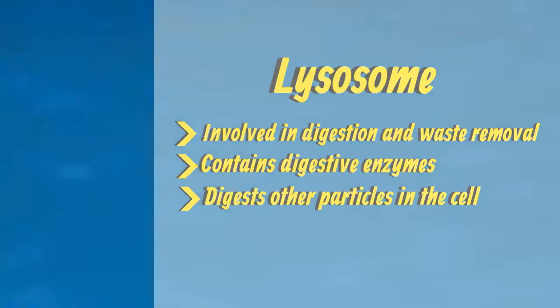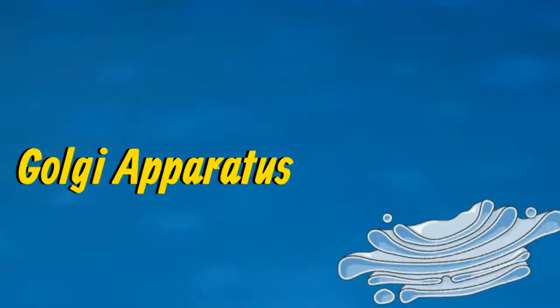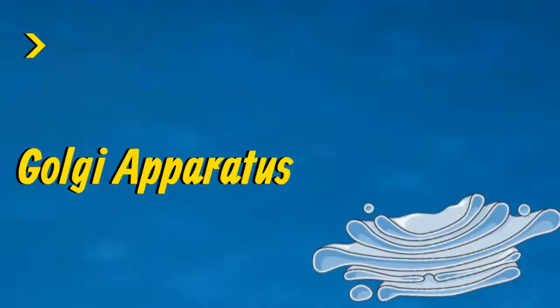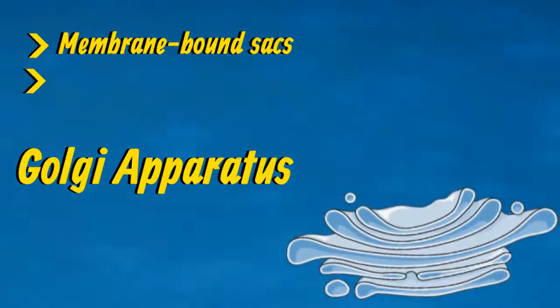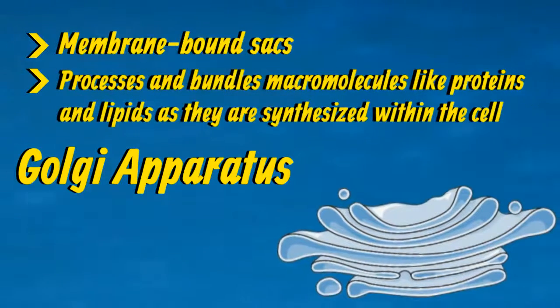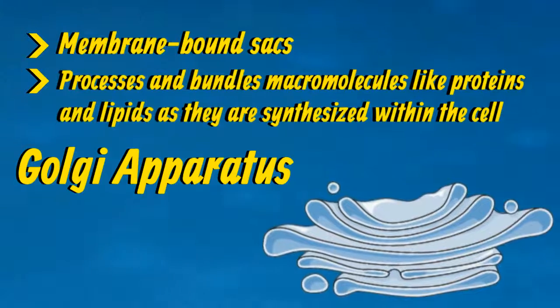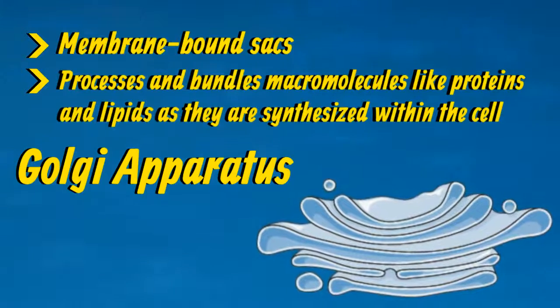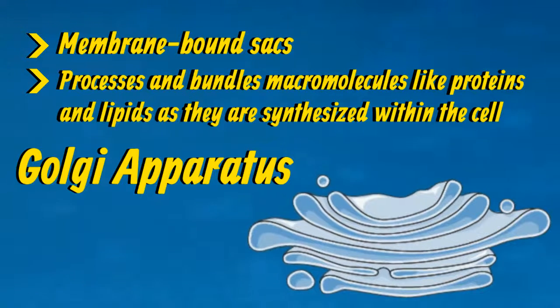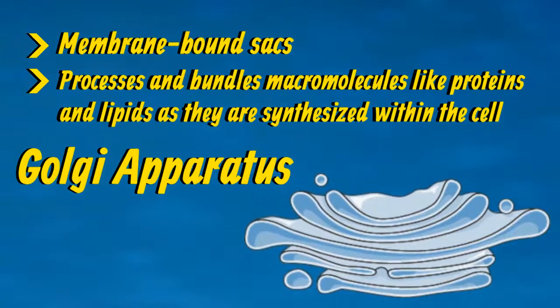Our next cell particle is the Golgi apparatus, which kind of looks like folded towels. The Golgi apparatus is made up of membrane-bound sacs, and it processes and bundles macromolecules like proteins and lipids as they are synthesized within the cell.